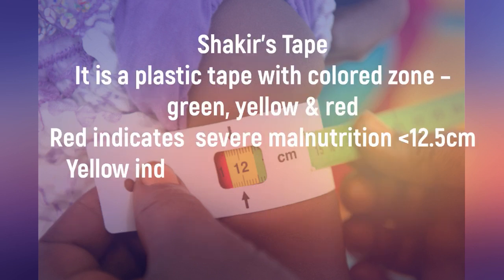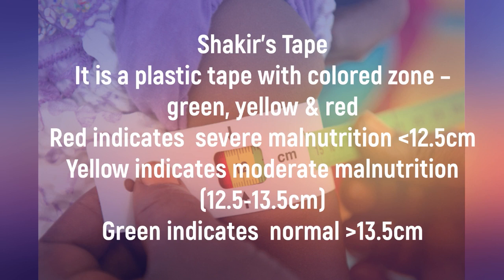Shakir's Tape is a plastic tape with coloured zones: Red indicates severe malnutrition (less than 12.5 cm). Yellow indicates moderate malnutrition (12.5–13.5 cm). Green indicates normal (greater than 13.5 cm).